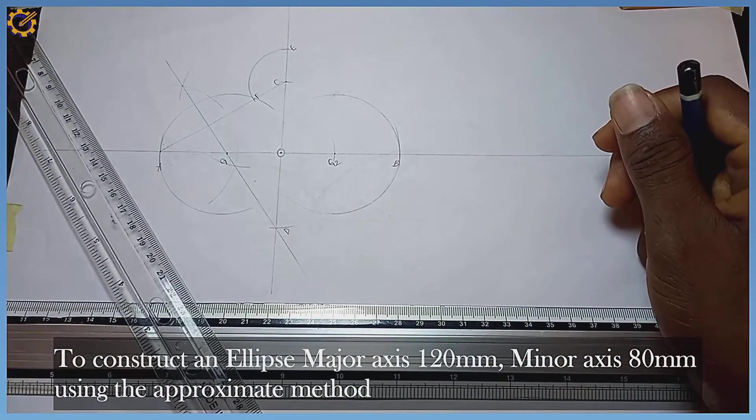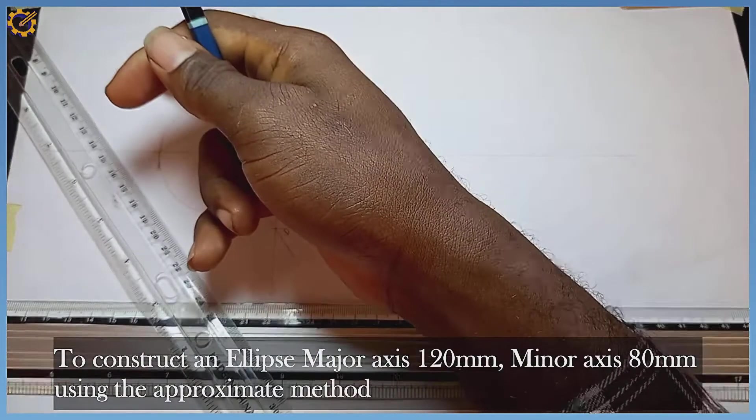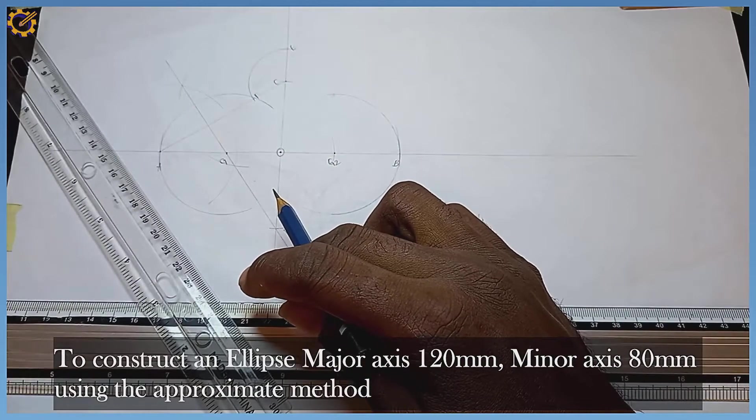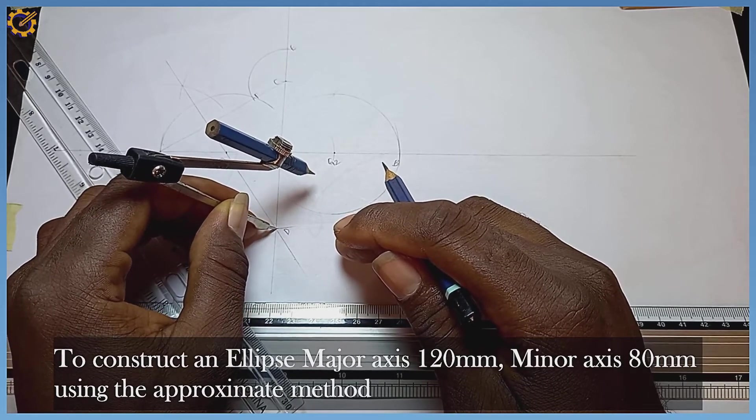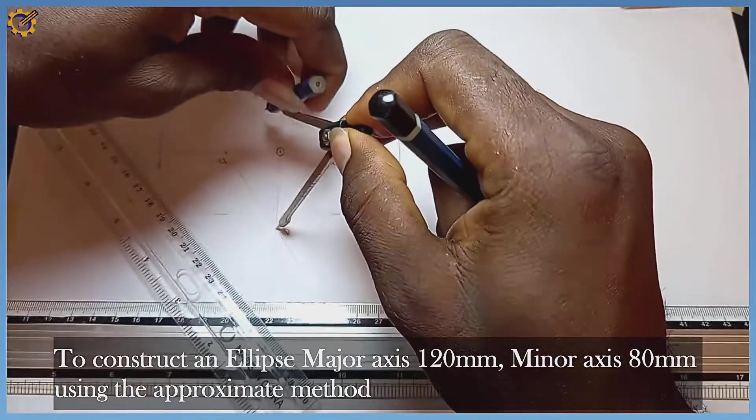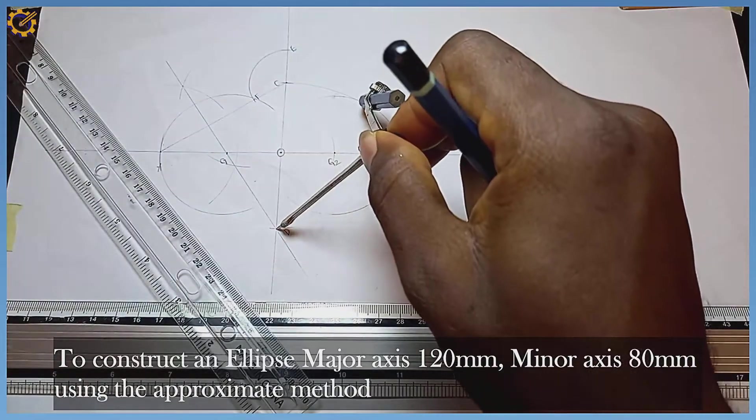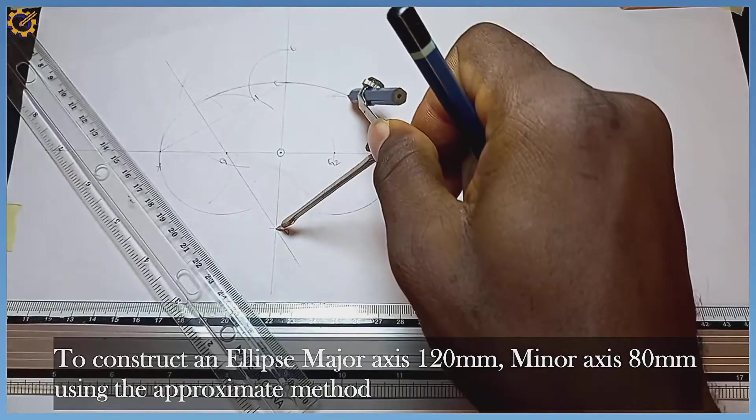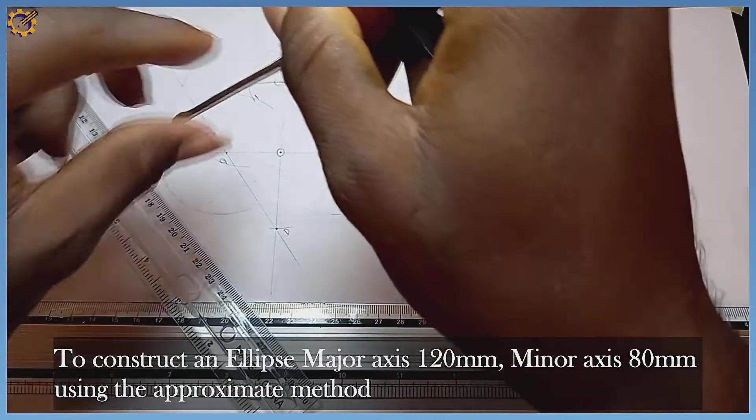Standing right here where my bisector touches the vertical line, I place my compass right here. For this one it touches at point D, from point D to point C. I draw as you can see. I can make this one thick since I know my limits now.